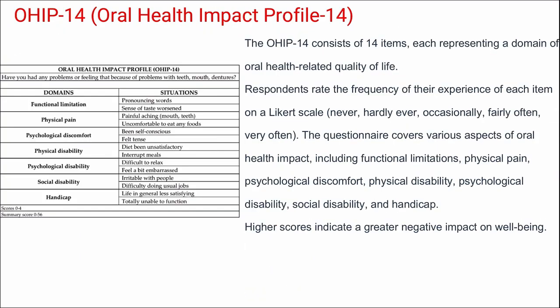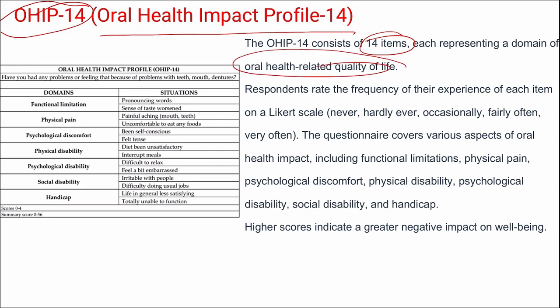Next is the Oral Health Impact Profile-14 (OHIP-14), which consists of 14 items representing domains of oral health-related quality of life with Likert scale responses from never to very often. Domains covered include functional limitations, physical pain, psychological discomfort, physical disability, psychological disability, social disability, and handicap. Higher scores indicate a greater negative impact on well-being.